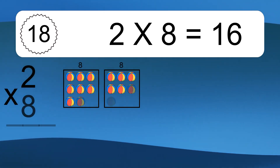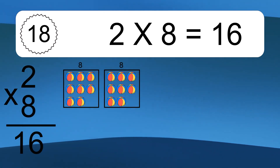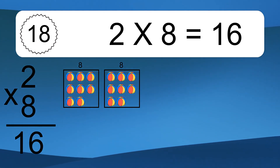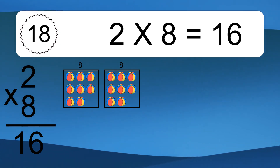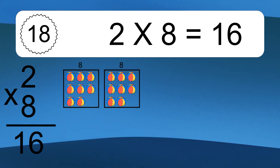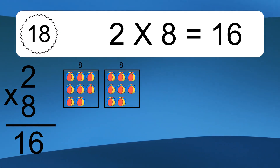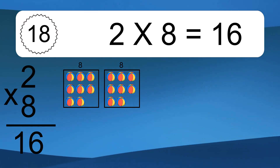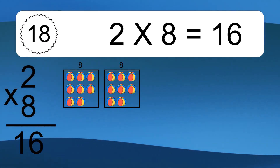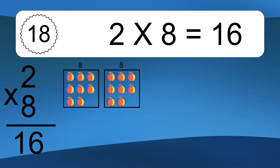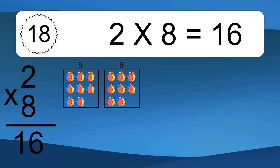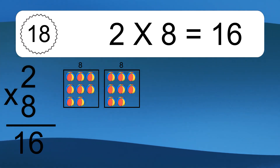Two times eight equals what? Two times eight equals sixteen. We have two boxes, and each box has eight colorful balls inside. If you count all the balls in all the boxes together, you will have two times eight balls. This equals 16 balls.